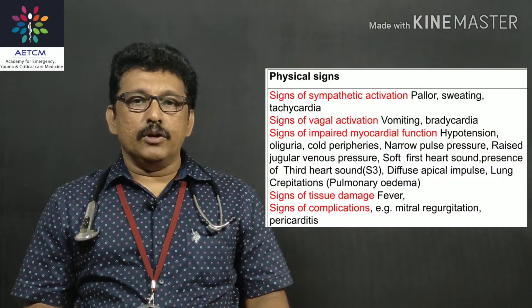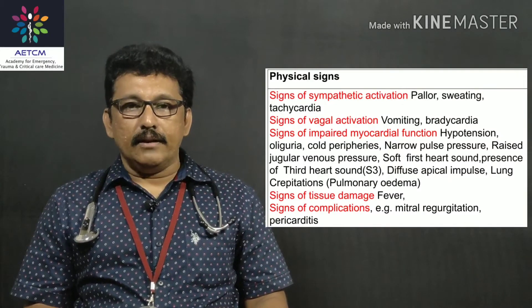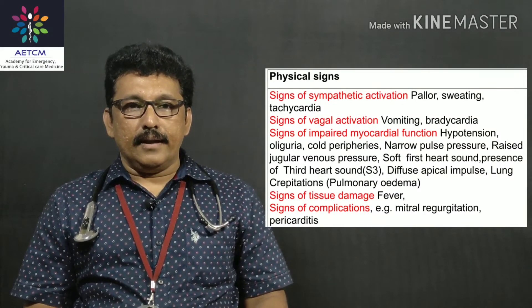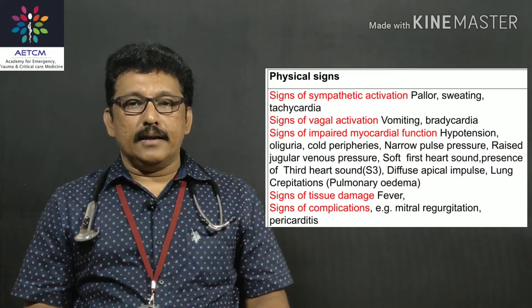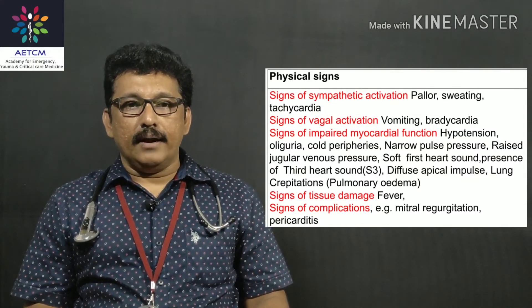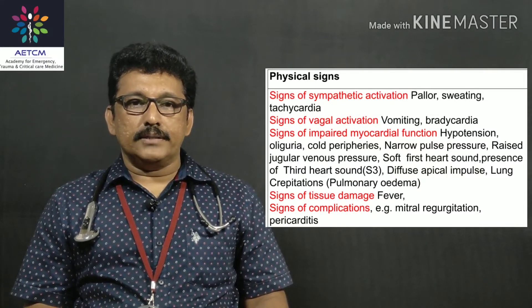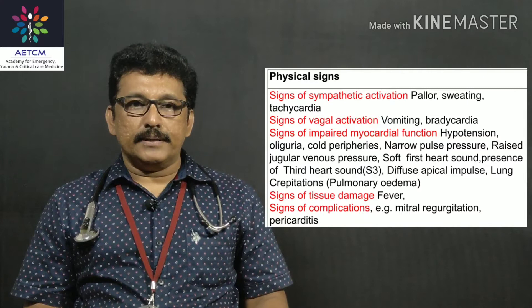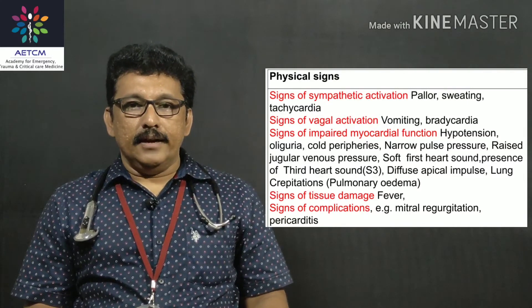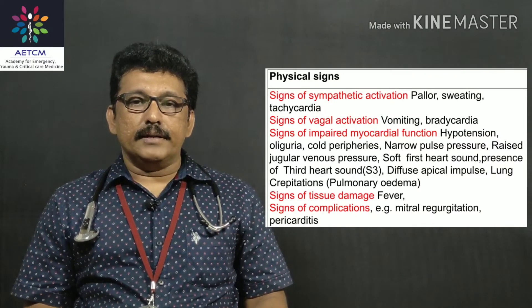Signs of acute myocardial infarction are mainly due to sympathetic activation: sweating, pallor, and tachycardia. There can also be signs of vagal activation such as vomiting and bradycardia. Signs of impaired myocardial function include hypotension, cold peripheries, narrow pulse pressure, raised JVP, and a third heart sound.